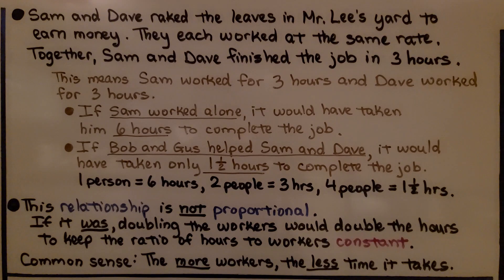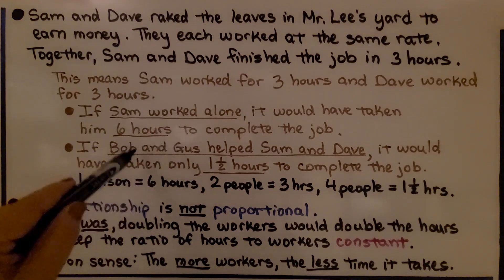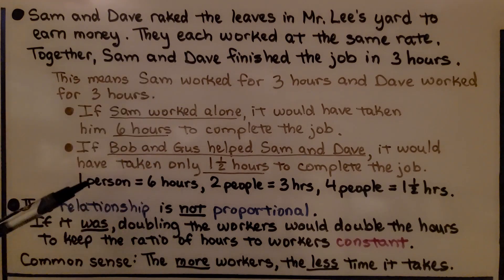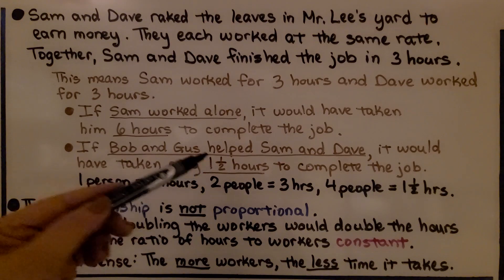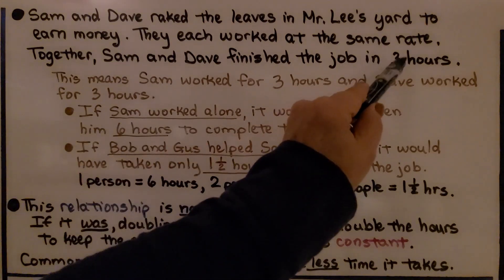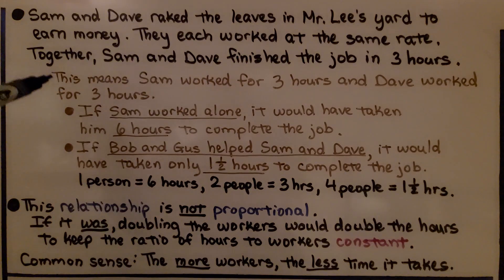If it was proportional, doubling the workers would double the hours to keep the ratio constant. When we added Bob and Gus, if this was proportional, it would have taken 6 hours. But that's not logical. That's what would happen if Sam worked alone. Common sense: the more workers, the less time it takes.